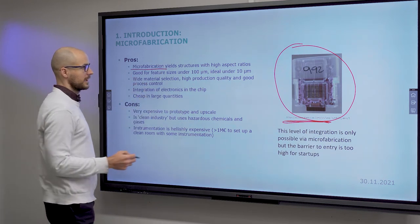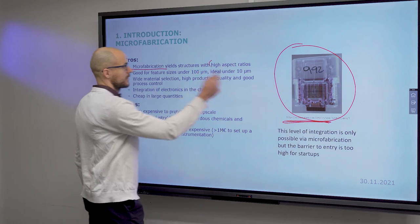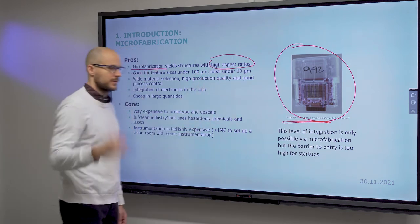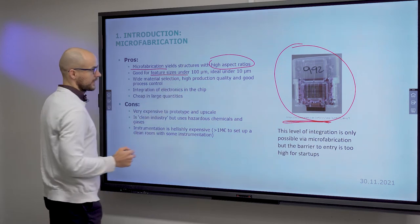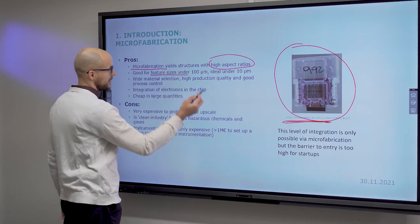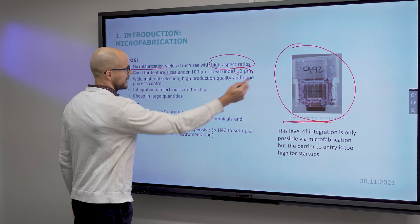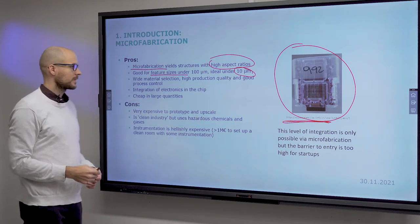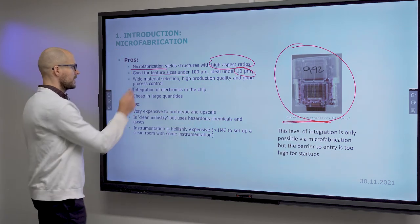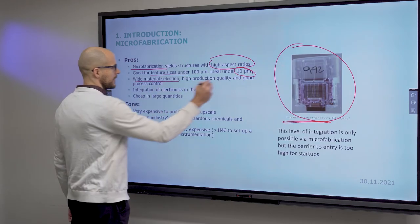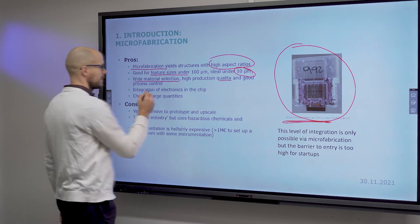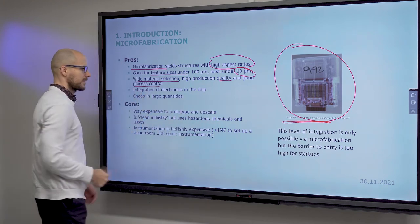Microfabrication gives you structures with high aspect ratio, meaning the difference between smallest and largest features. You can achieve good feature sizes under 100 microns, but it is best at under 10 microns. You have a wide material selection of high quality and excellent process control.